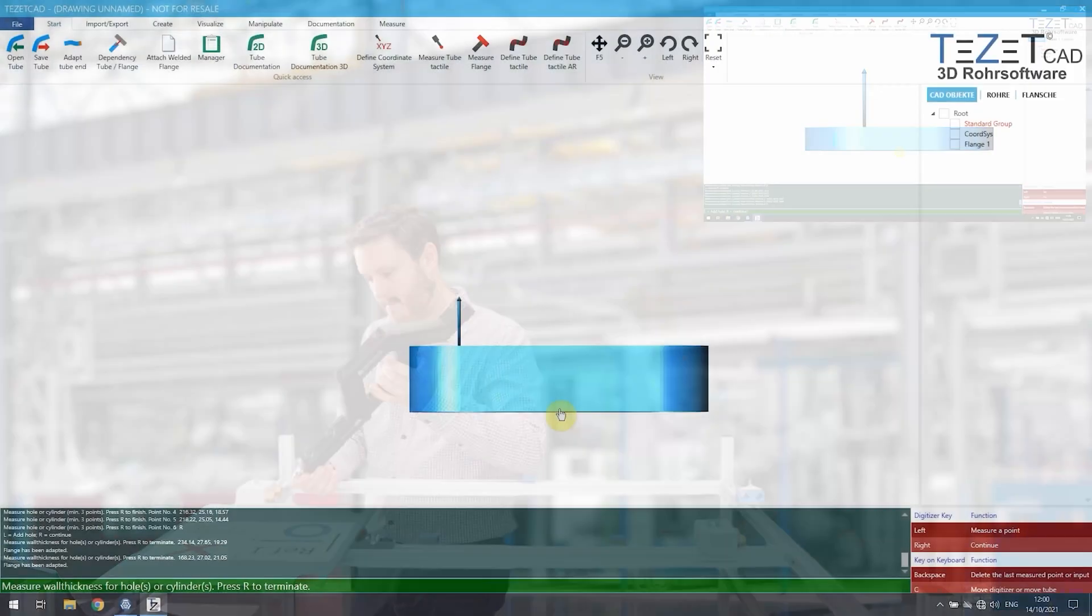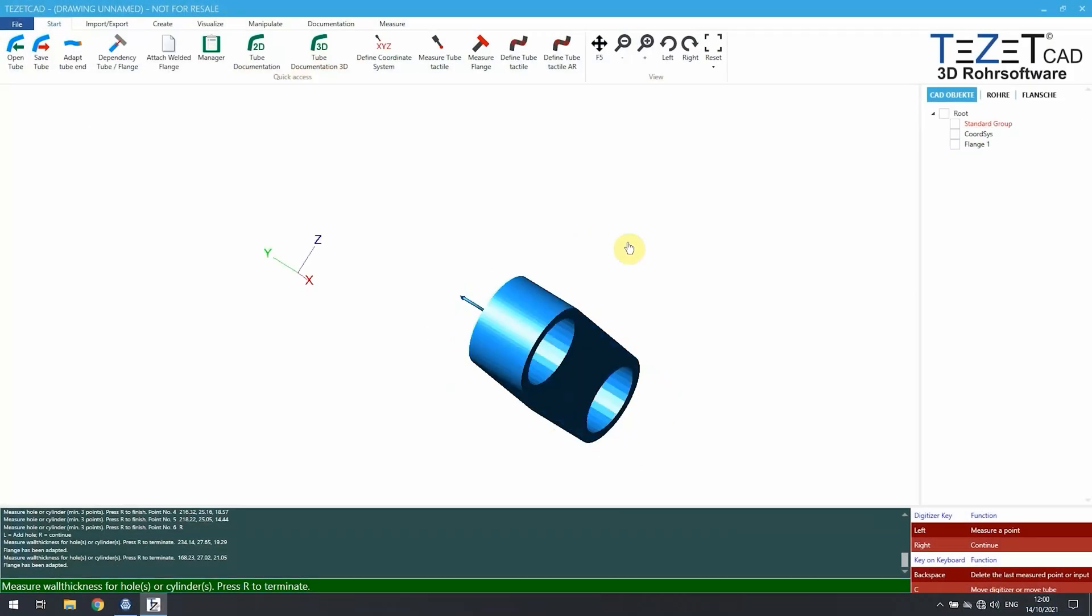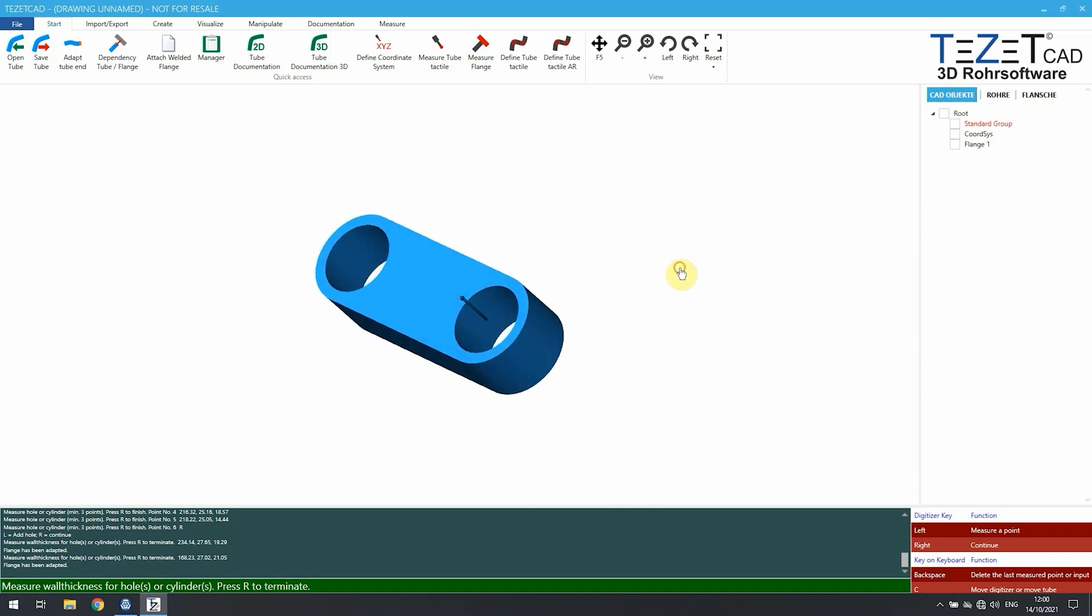The software makes use of existing coordinate systems, such as the machine frame, for guidance points when creating pipe connections.